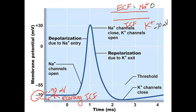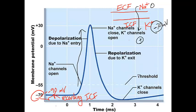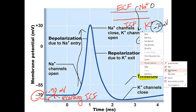When depolarization occurs, sodium enters the cell, causing the membrane potential to move from around negative 70 millivolts toward a less negative or positive value — shown as an upswing on the graph. Another critical number is negative 55 millivolts, which is the threshold: once enough sodium enters and the membrane potential reaches negative 55 millivolts, the sodium gates open fully and an action potential is generated.